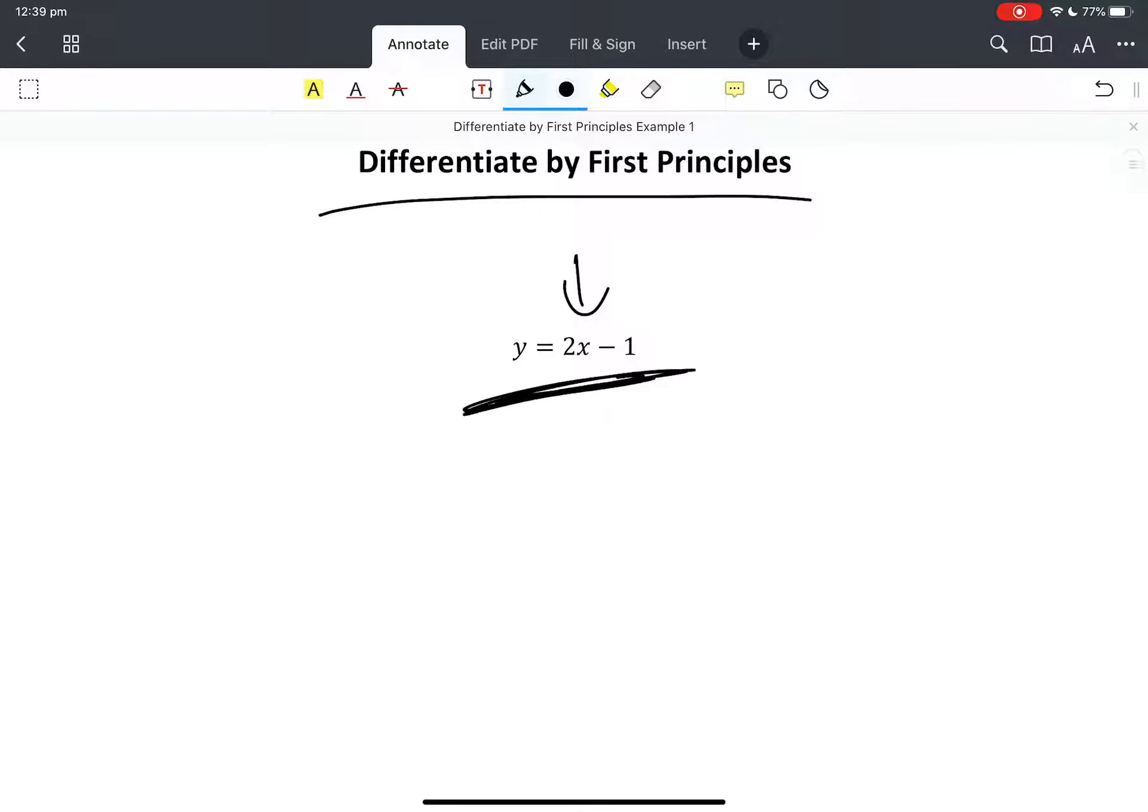So this is really, this is too simple for this because we already know that the slope is 2. We already know our answer because 2 is the M, isn't it? Okay, anyway, so slope.